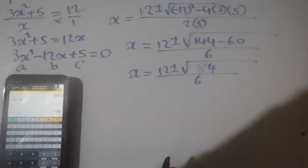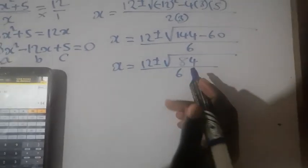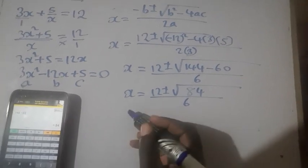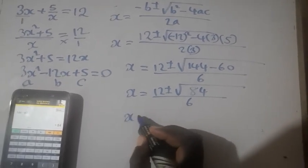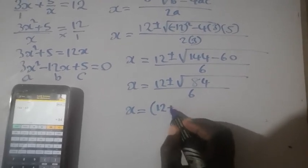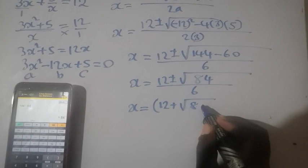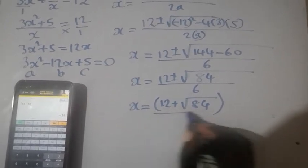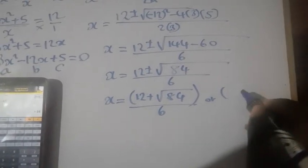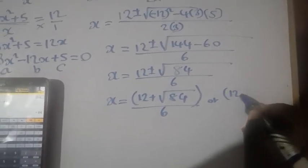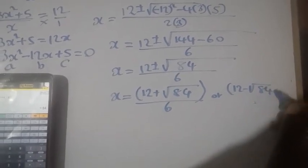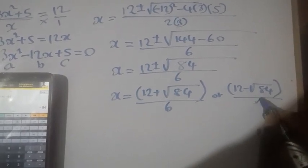At this stage we have to split the signs, so we are going to have x equal to open brackets 12 plus square root of 84 close over 6, or open brackets 12 minus square root of 84 close over 6.